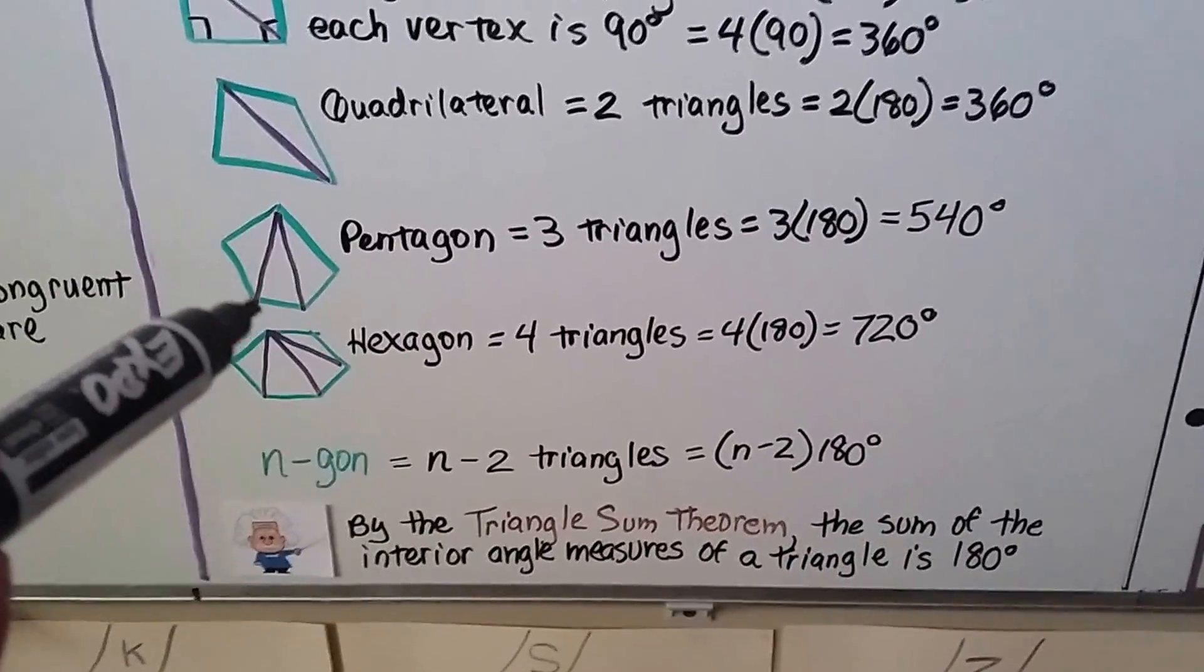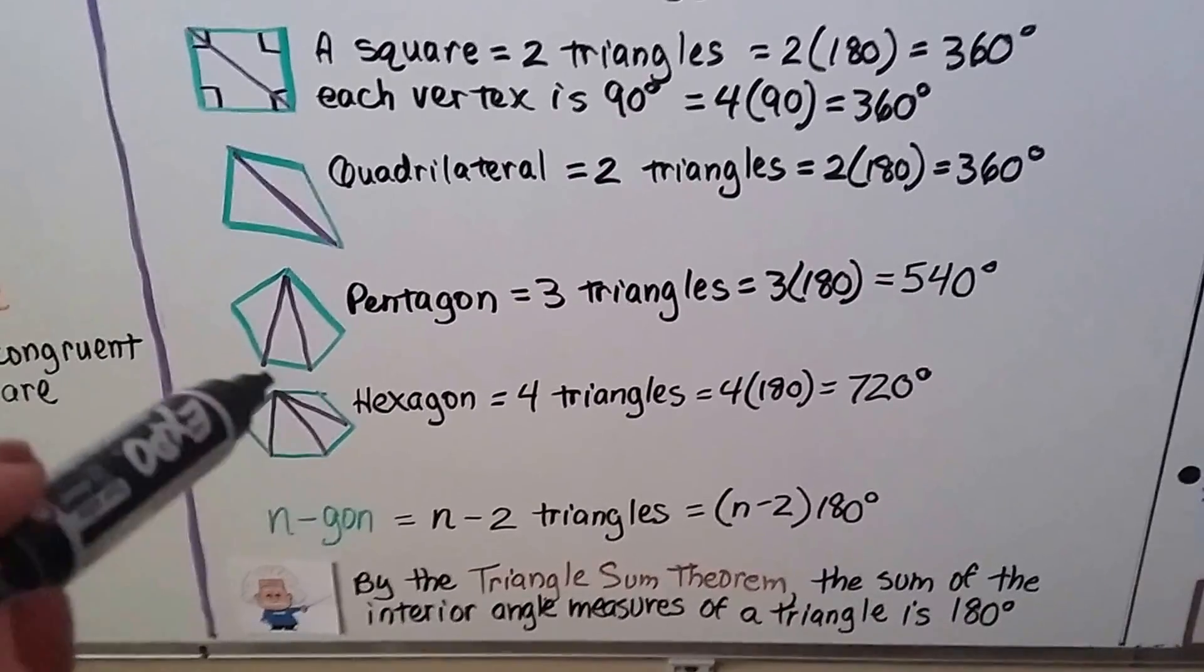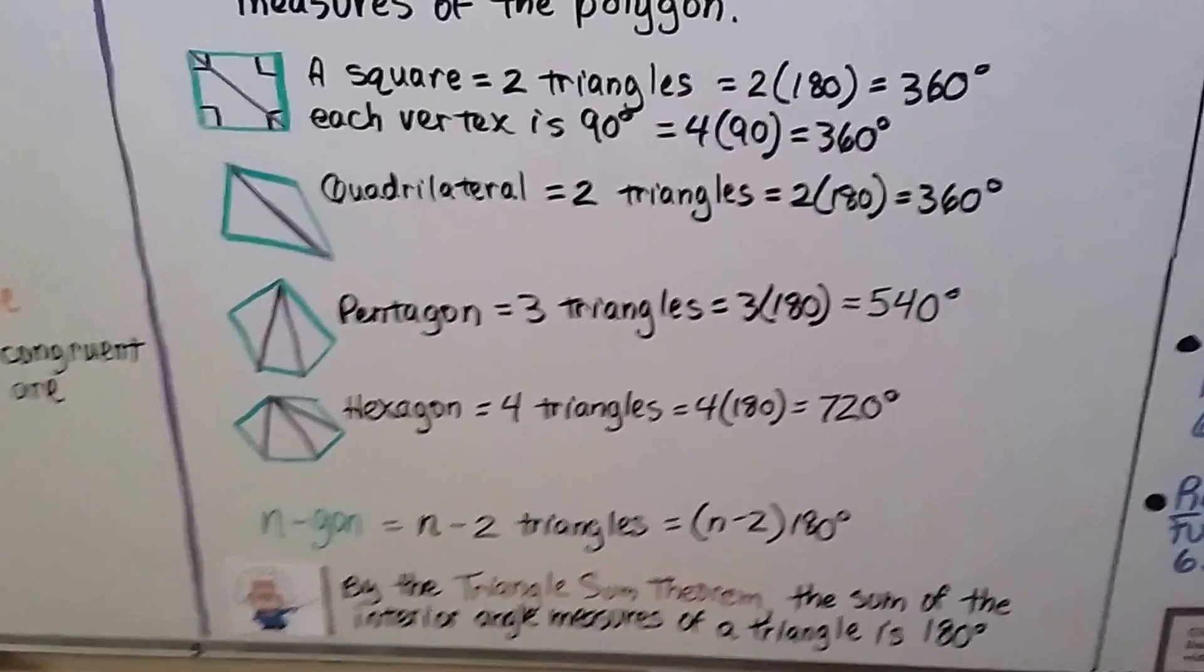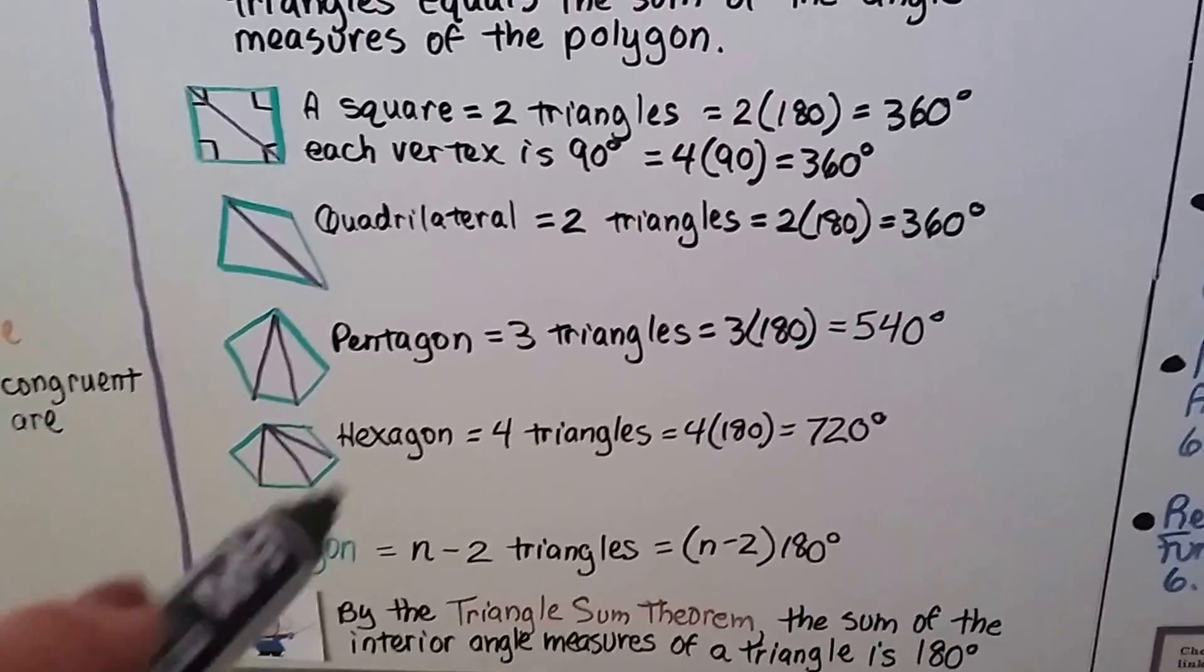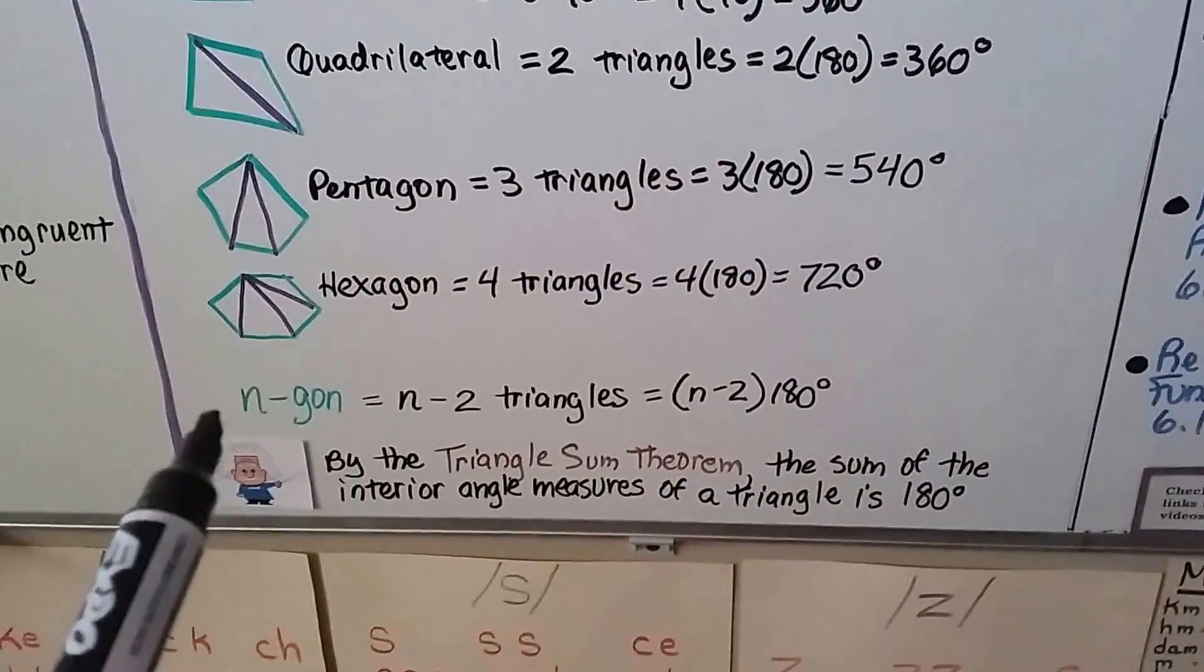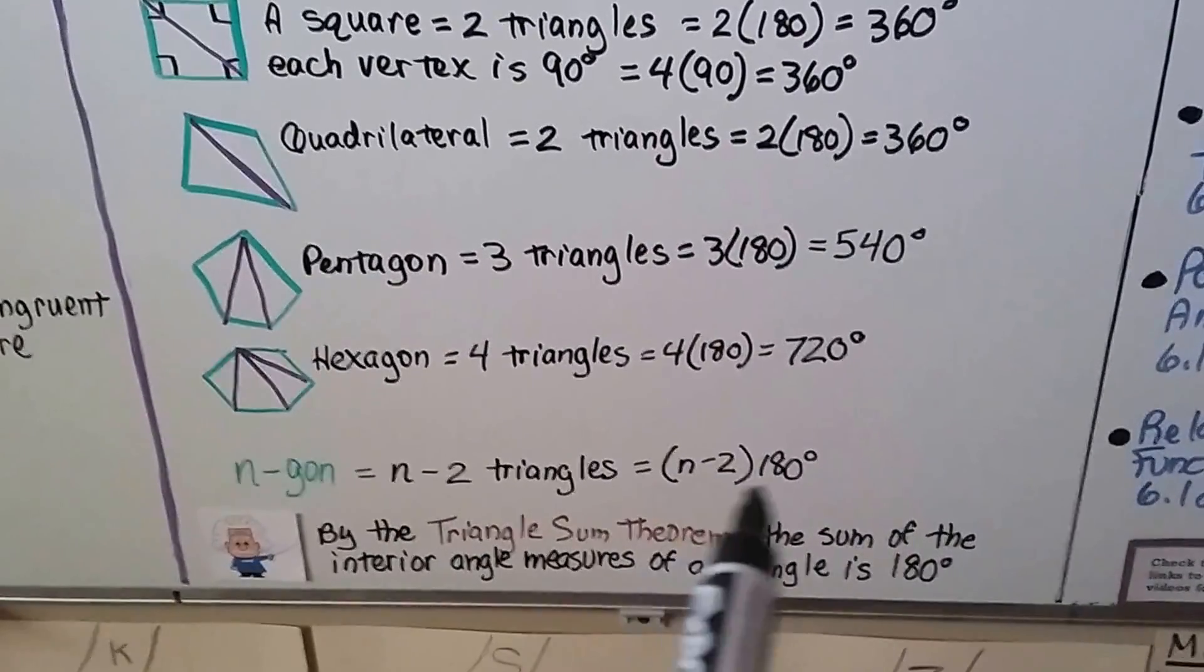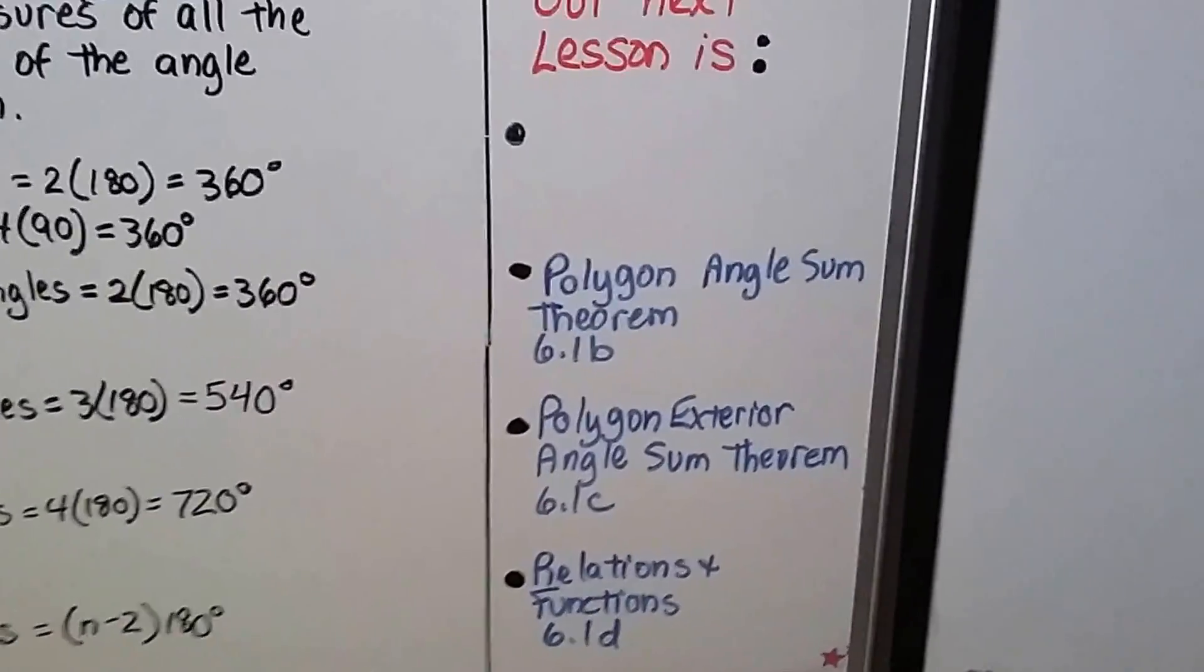We do it to a hexagon, we choose one vertex, and we draw a diagonal to another vertex, to another vertex, and another vertex. We make four triangles. Four times 180 is 720. Anytime you see a polygon and you want to know what its interior angle measures are, you can pick a vertex and draw diagonals down from it to the other vertices and multiply by 180. An n-gon would be n minus 2 triangles, so we would have n minus 2 times 180. We'll talk about that more in our next lesson, Polygon Angle Sum Theorem.